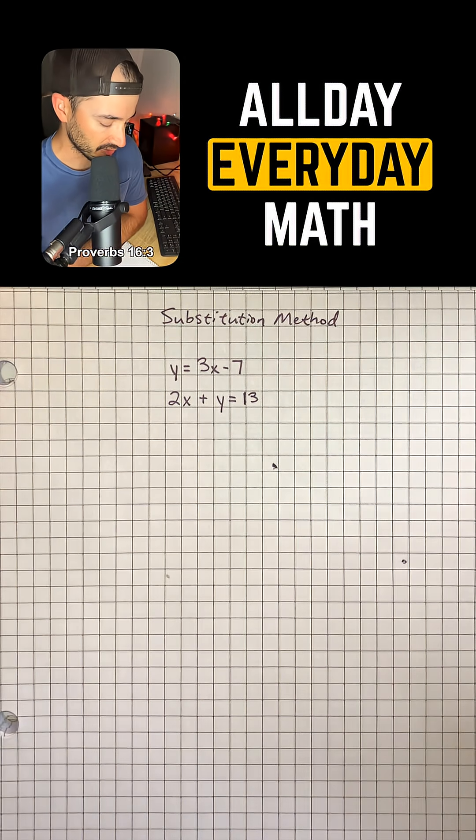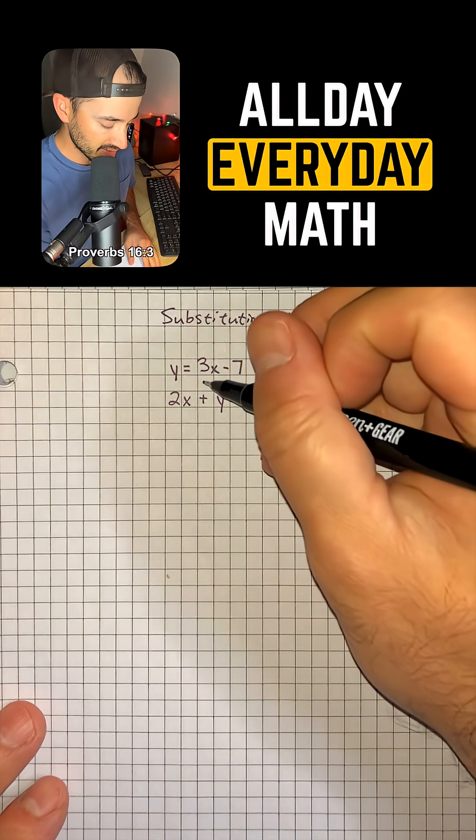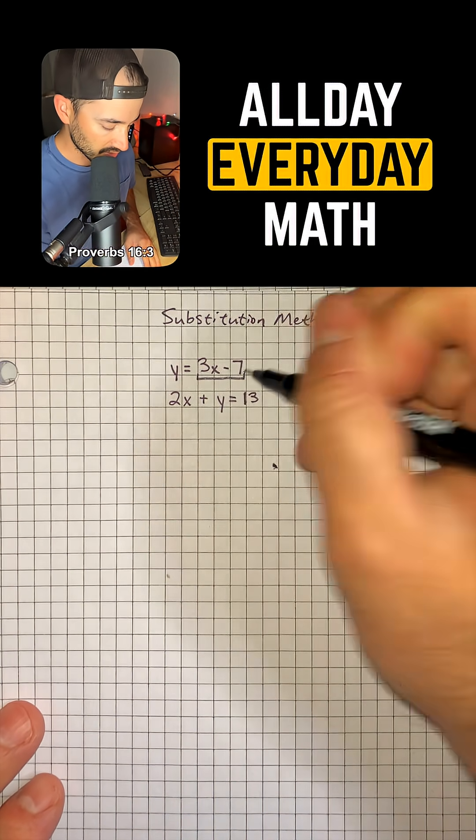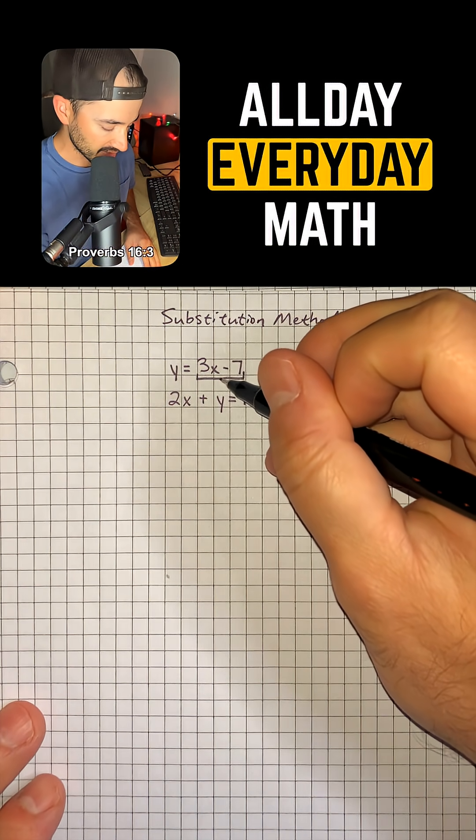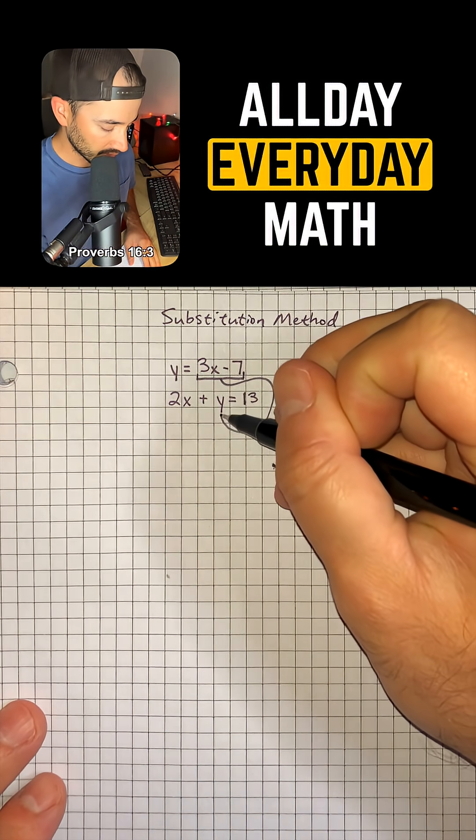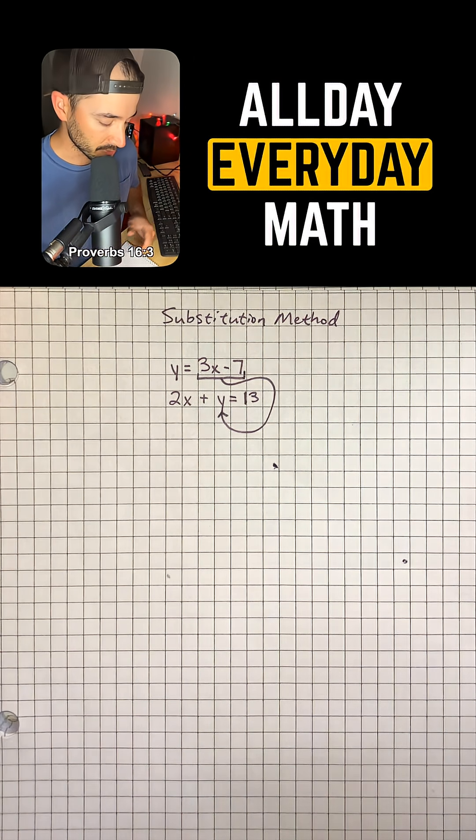The substitution method is just like it sounds. We are going to substitute this part of the first equation because that is equal to y. And we're going to substitute that 3x minus 7 in for y, because if they're equal to each other, then we can just use them interchangeably.